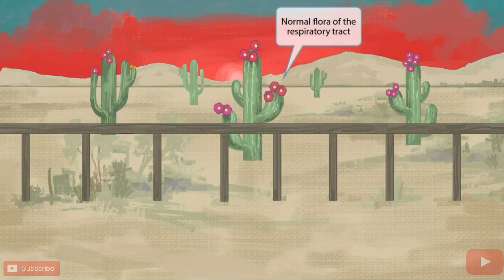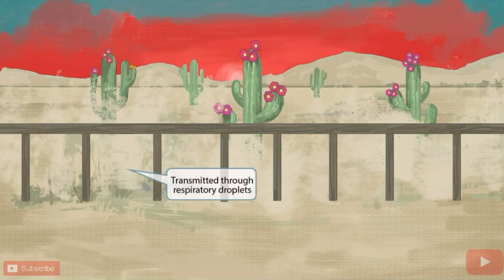Notice that we've added some flowers on top of the cacti. The flowers are used as a symbol for flora, and the fact that they're up high on top of the cacti should help you remember that Moraxella is part of the normal flora of the respiratory tract. Notice that we've added some dusty mist to the scene — mist is a cloud of tiny water droplets, so we've used it as a symbol to represent transmission through respiratory droplets.